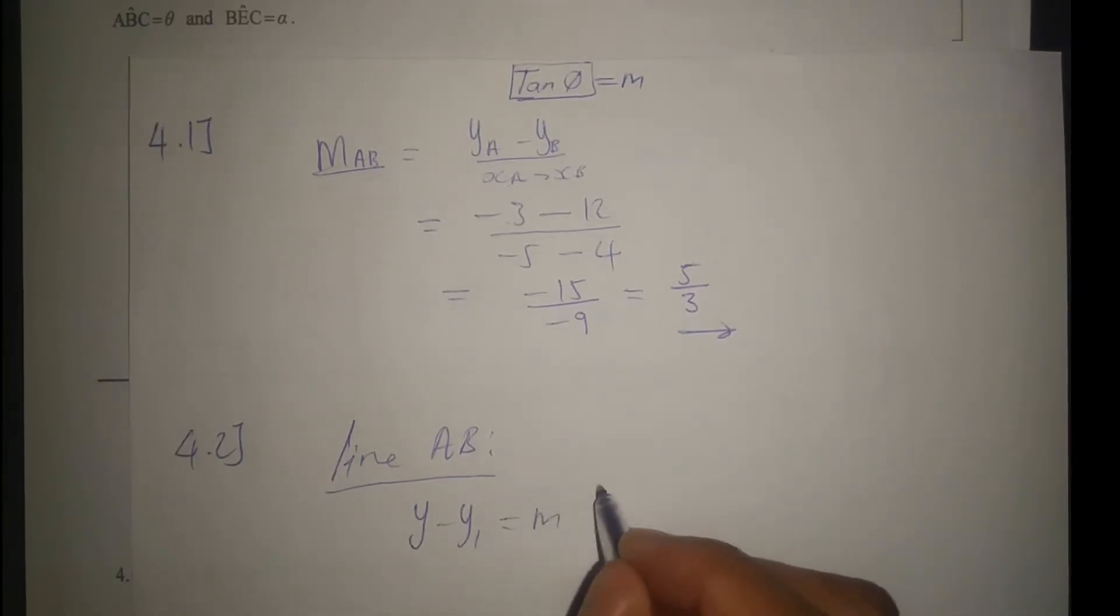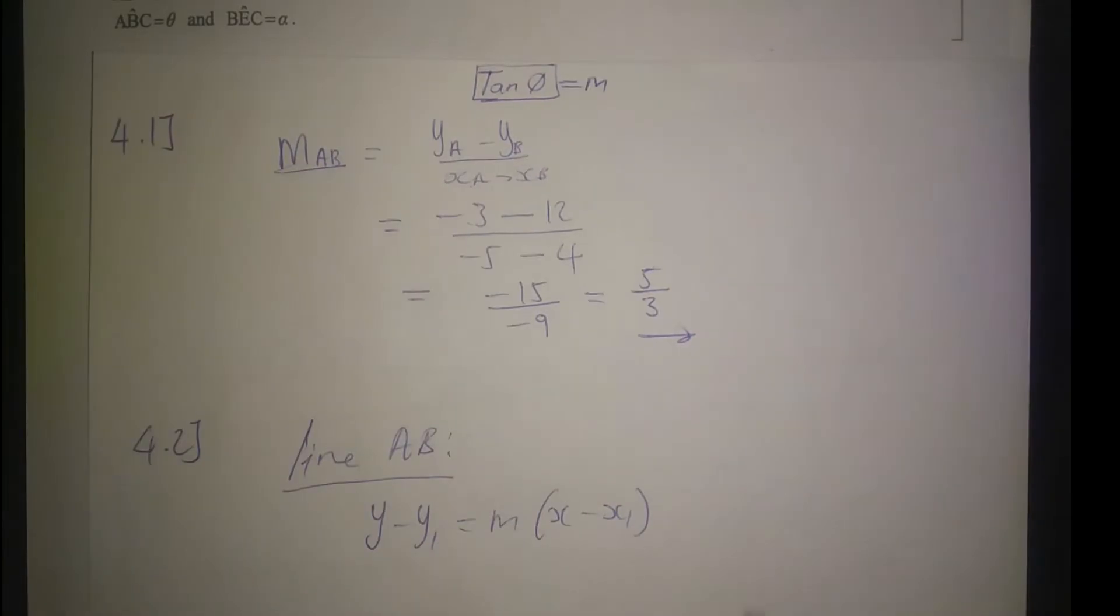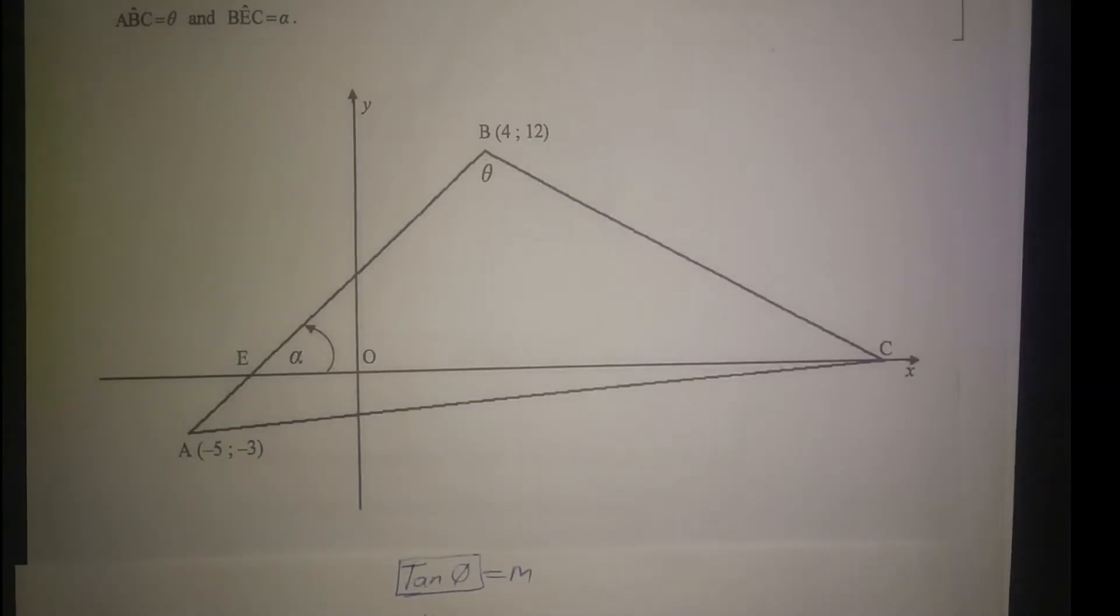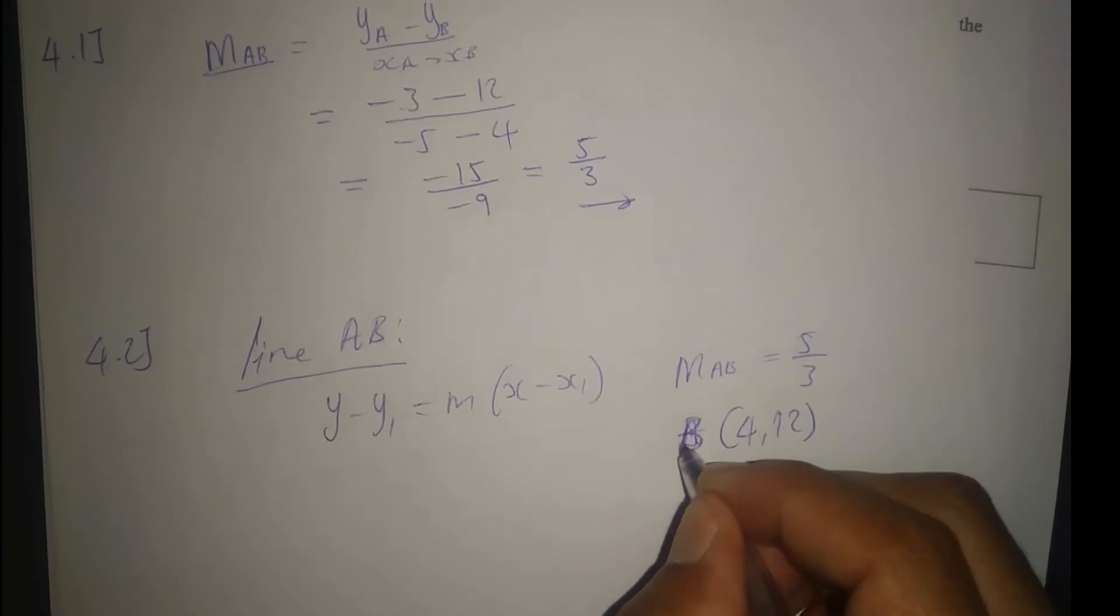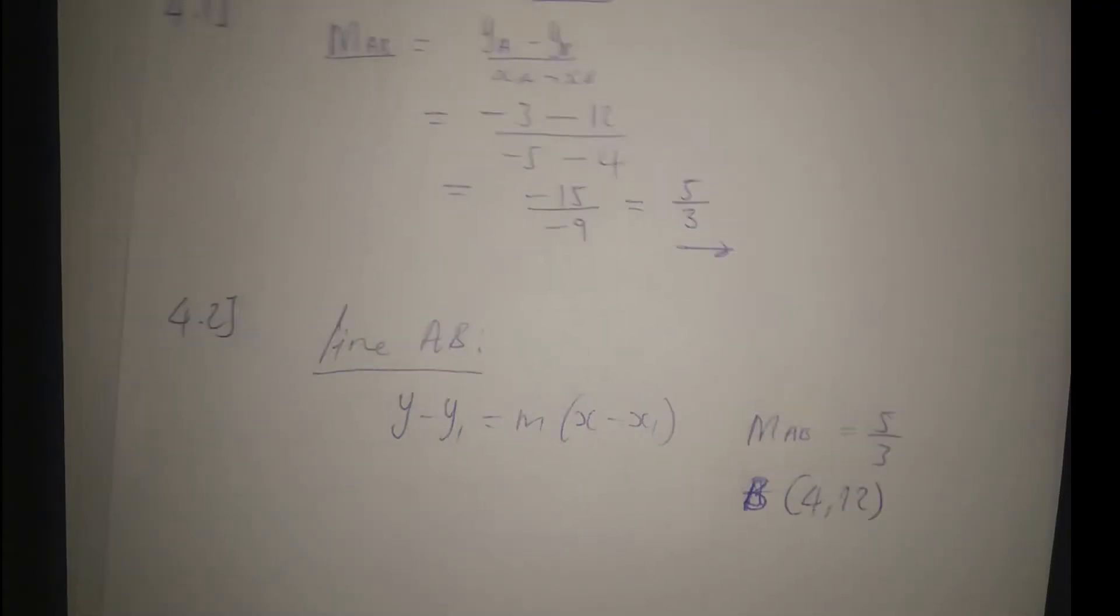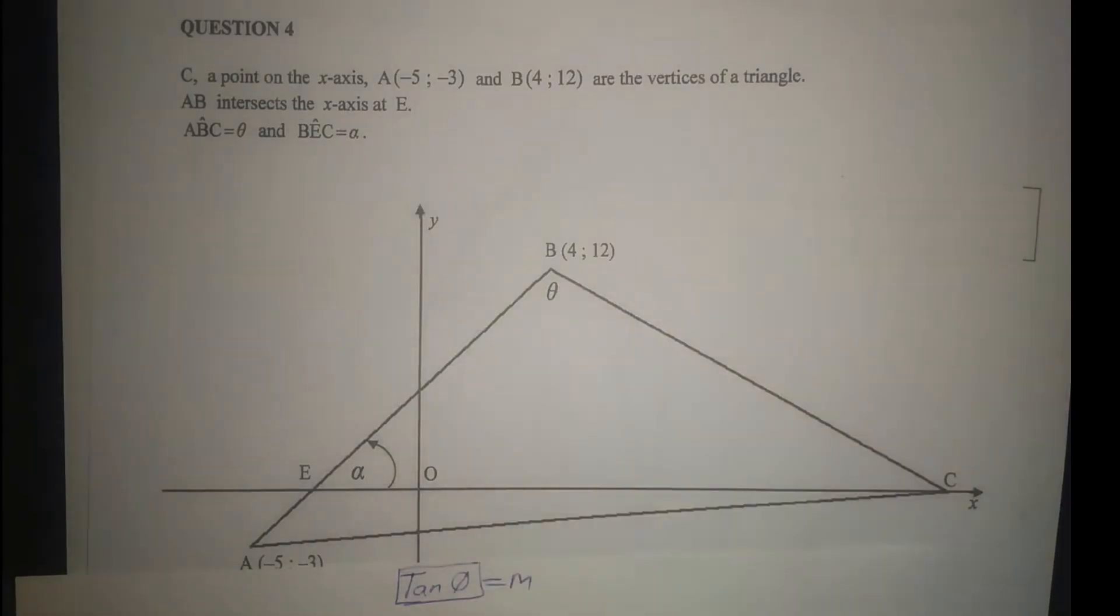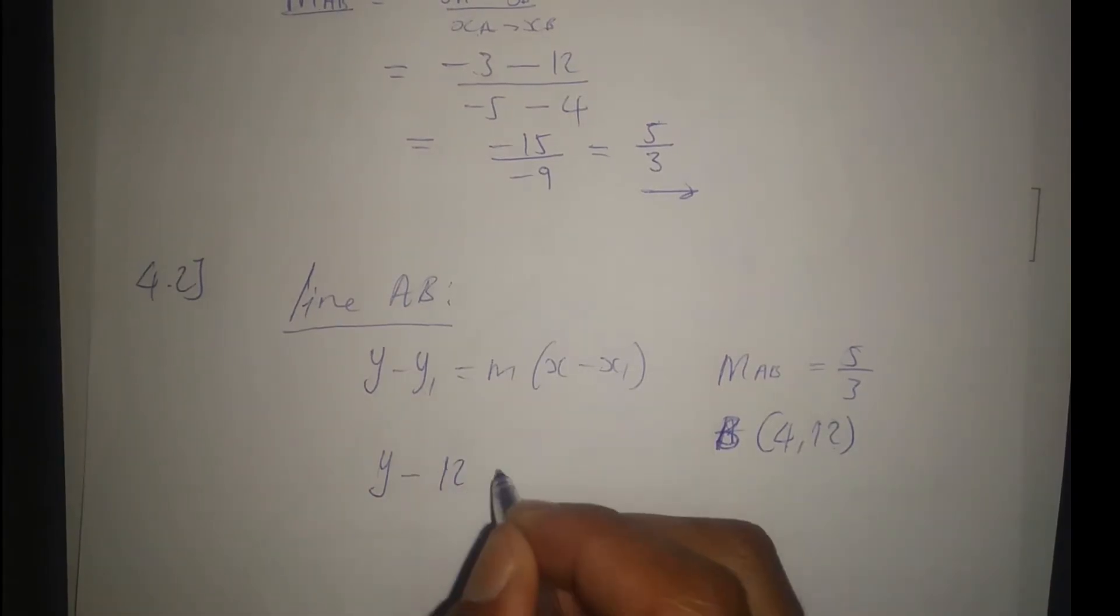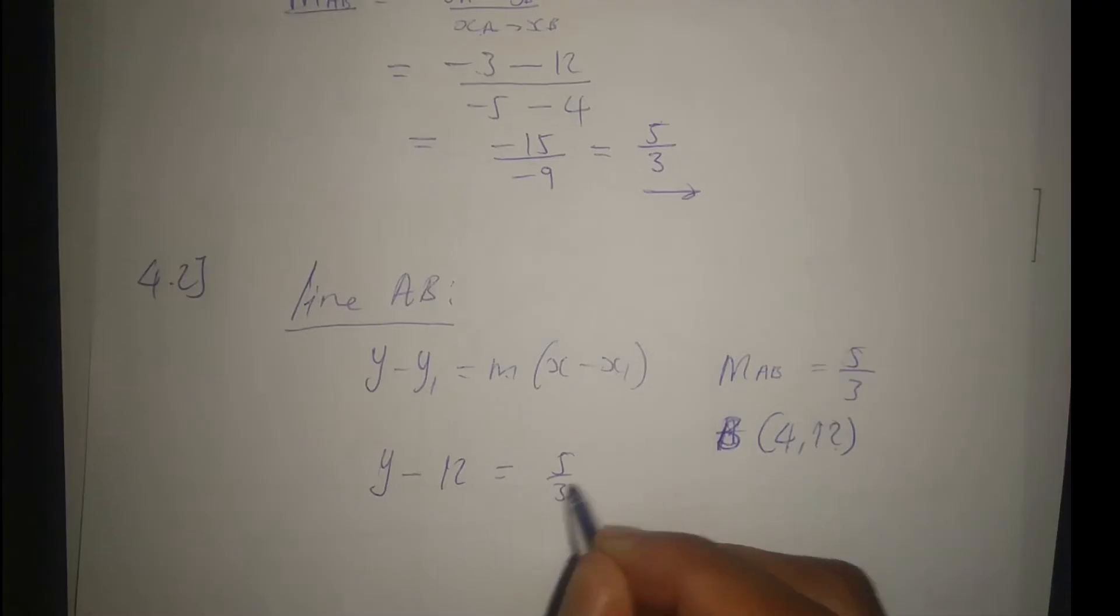Write the equation of line AB. The equation is y minus y_1 equals m times x minus x_1. Now for the equation of a line, you use the gradient, which is 5 over 3 that we calculated, and you use one point, not both. We'll use point B, which is (4, 12). The reason why I'm using B is because I'm avoiding negative signs.